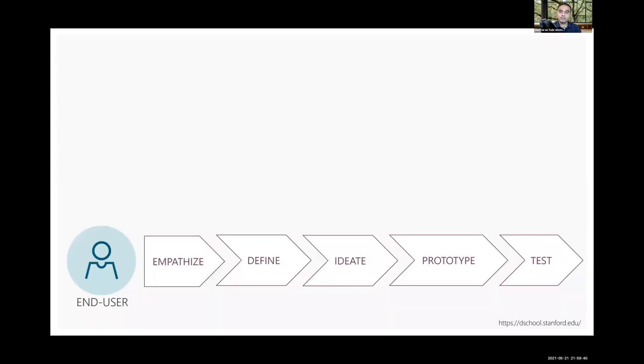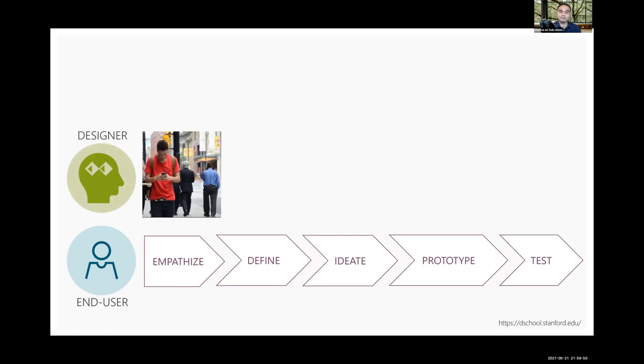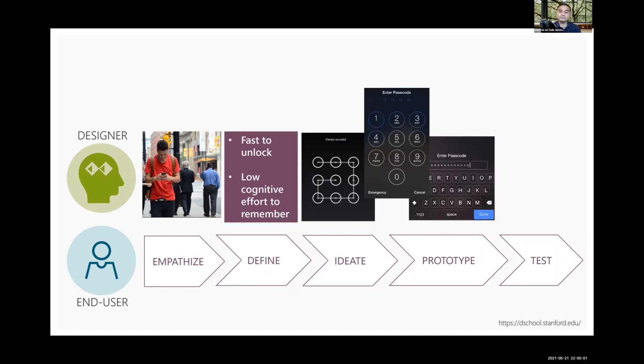Imagine designing a phone unlock user experience by taking a human-centered approach. As a designer, you will first try to understand how end users use their phones and what their security concerns are. You will then translate this understanding into specific design needs such as quick to unlock and low cognitive effort to remember. Next, you will prototype different solution alternatives based on needs such as numeric key code, alphanumeric password, and pattern-based unlock. You will then gather feedback from end users and determine that a numeric keypad is the best solution.